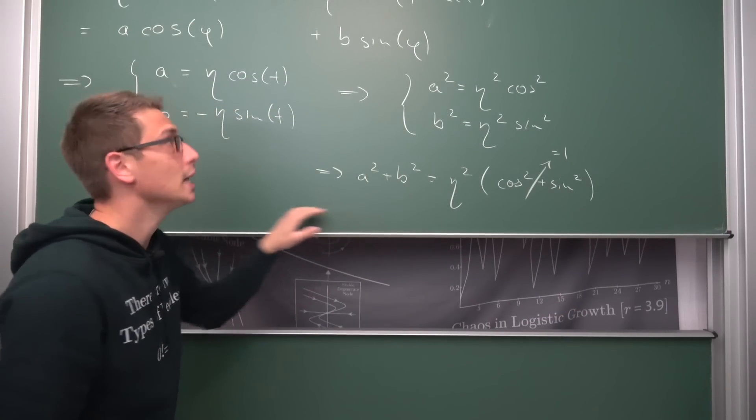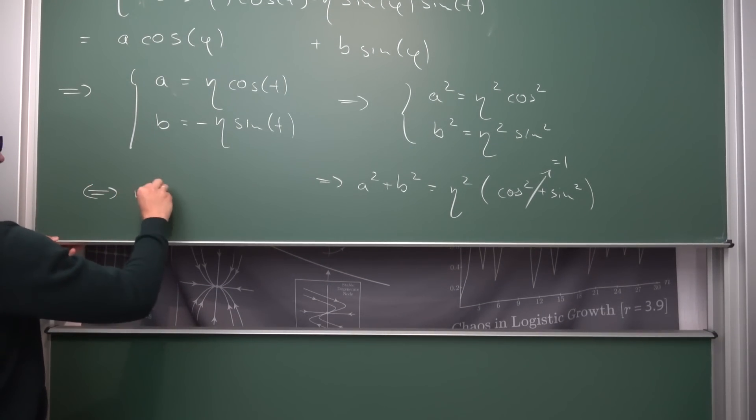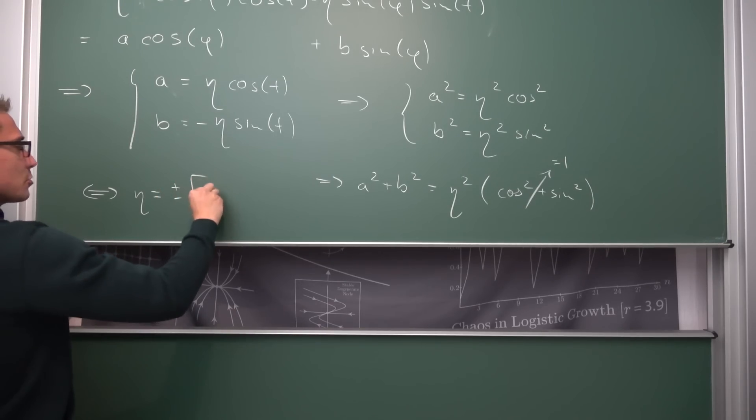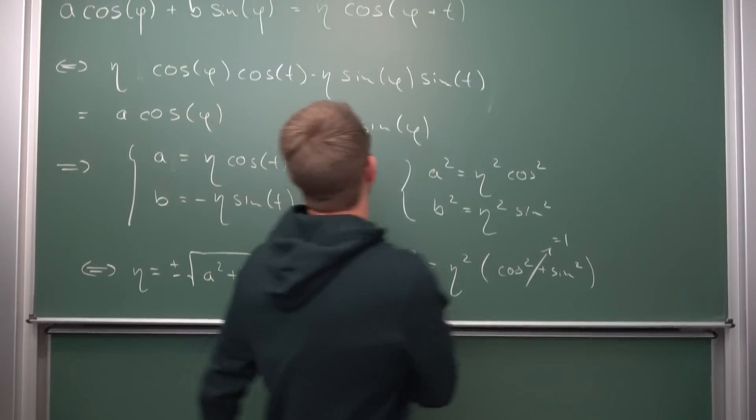Meaning overall, we are going to get that a squared plus b squared, this is the left hand side, is equal to eta squared as a common factor times cosine squared plus sine squared. And we know this is something that we have showed just a few days ago. The cosine squared plus the sine squared is equal to 1. Meaning overall, eta, our coefficient, our amplitude that we are going to get here, is equal to plus or minus the square root of a squared plus b squared.